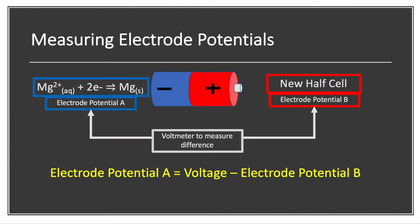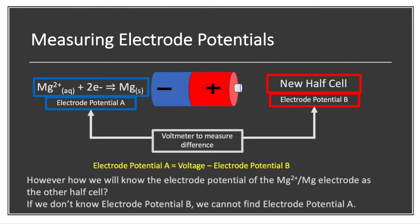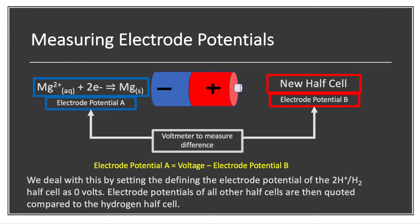So the way scientists have worked it out is we've said, OK, what we will do is we will define an electric potential for a certain half cell. And the half cell we choose is the hydrogen half cell.